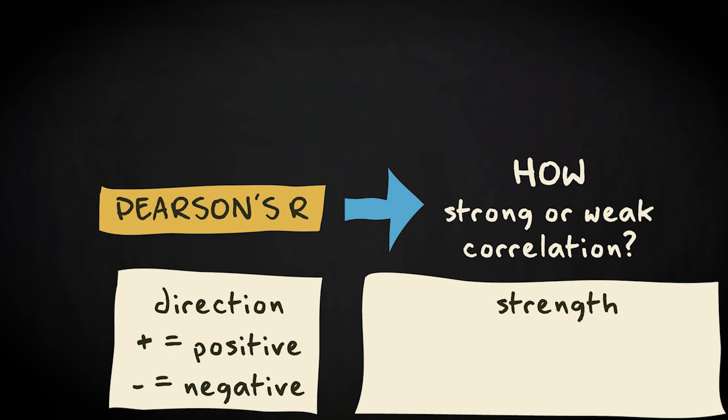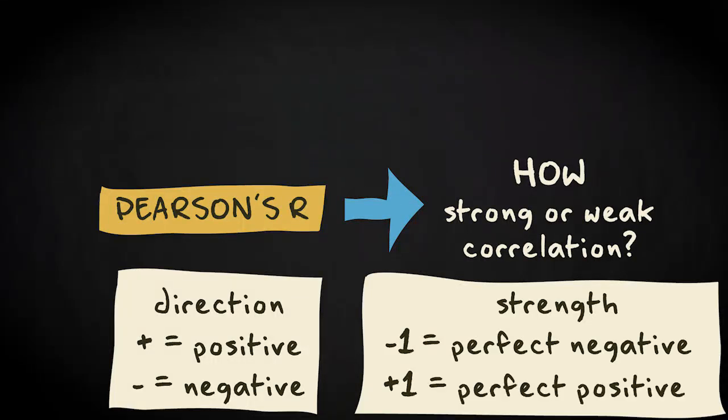Pearson's R is always a number between minus 1 and 1. Minus 1 refers to a perfect negative correlation and plus 1 to a perfect positive correlation. And 0 means that there is no correlation at all.